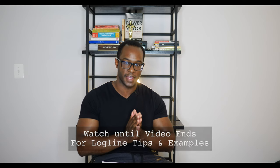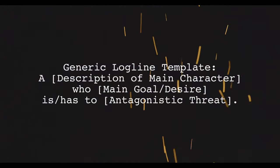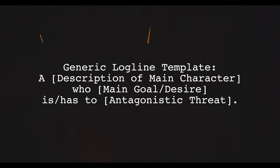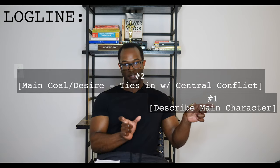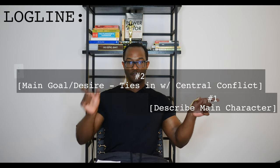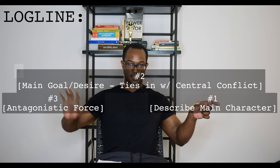The next part of your logline has got to be the conflict. So in the beginning you have your main character who is doing what — pursuing their main desire or goal — but comes into conflict with an antagonistic force or antagonist. So the formula is: main character who, main desire, has to fight up against this. That main desire or goal should tie into the central conflict of the story. If you don't know what a central conflict is, I made a video on it, so you can click it right now.